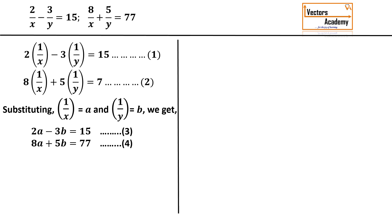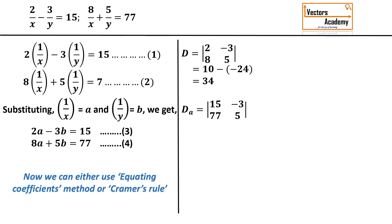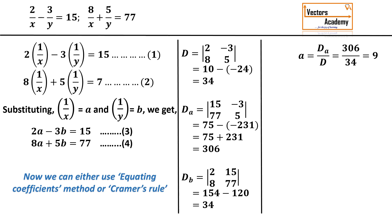Now these two equations are linear equations and we've already seen many methods to solve them. The easiest and fastest is either equating coefficients or Cramer's rule. In this question I'll be using Cramer's rule. I find D, the determinant of the coefficients, and get 34. Then replacing 2 and 8 by 15 and 77 I get Da as 306. Replacing the coefficients of y, that is minus 3 and 5, by 15 and 77 I get Db as 34.